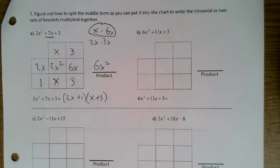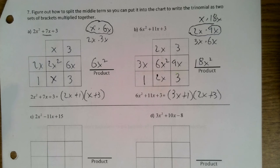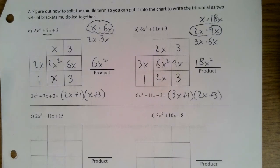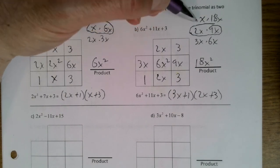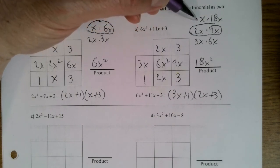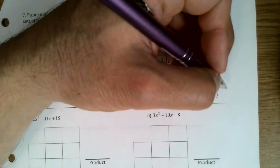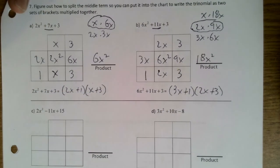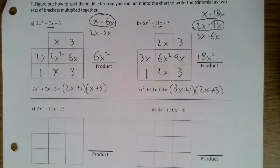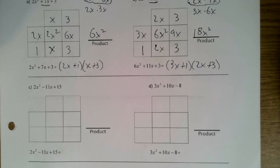I'll let you try part b — pause the video and when you think you've got it, I'll put the answer up. One thing to mention: some of you may find this chart a bit of a waste of time if you can just see that 2x times 9x gives 11x. If that's the case, don't bother drawing it out — all I really need is the final factored line. But I do highly recommend writing the diagonal product down, as it helps a lot.